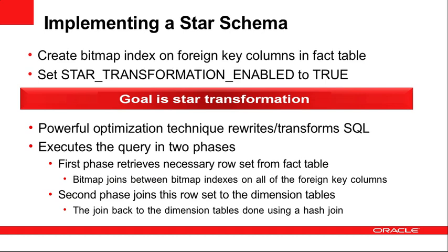So what is star transformation? It's actually a powerful optimization technique where the optimizer is going to rewrite the queries that come in on a star schema to allow them to be done in a two-phase approach. The first phase retrieves all the necessary rows from the fact table using those bitmap indexes created on the foreign key columns. Once we have those rows we enter phase two, which joins out to all of the dimension tables — typically done using hash joins. Let's take a look at an example.